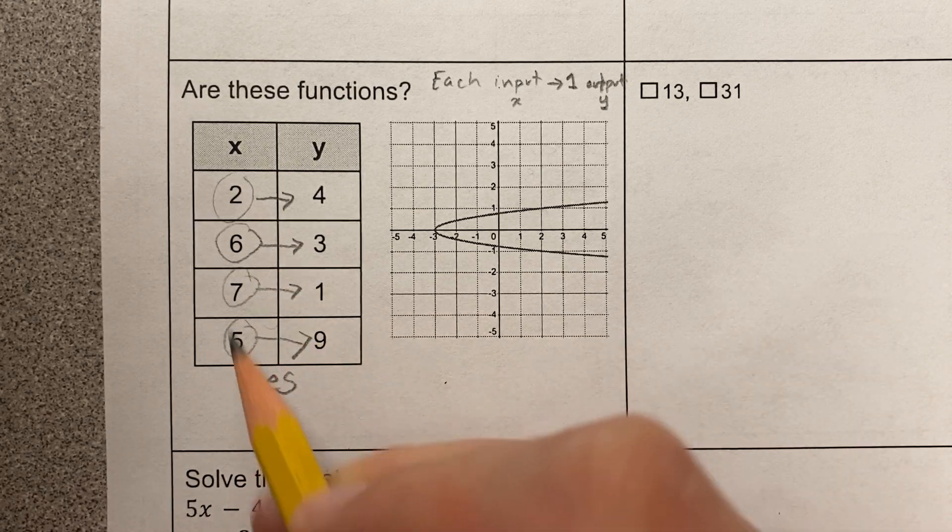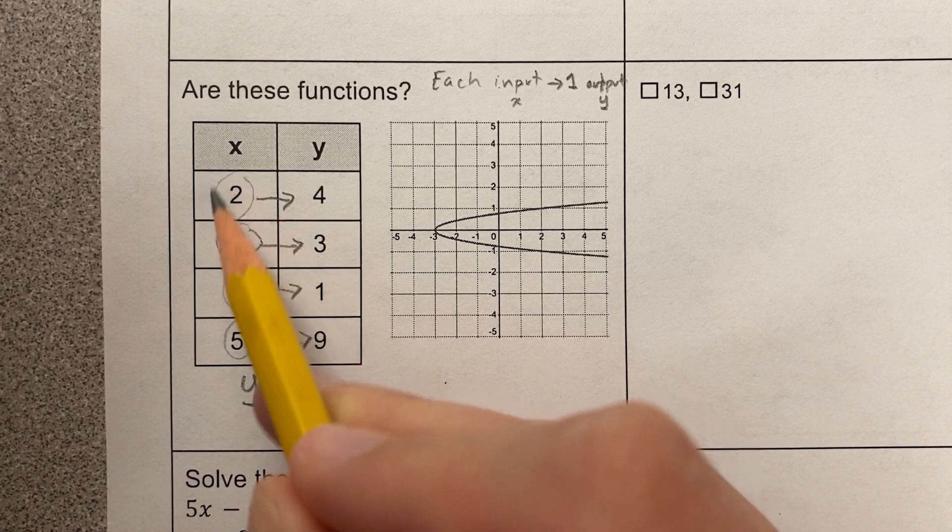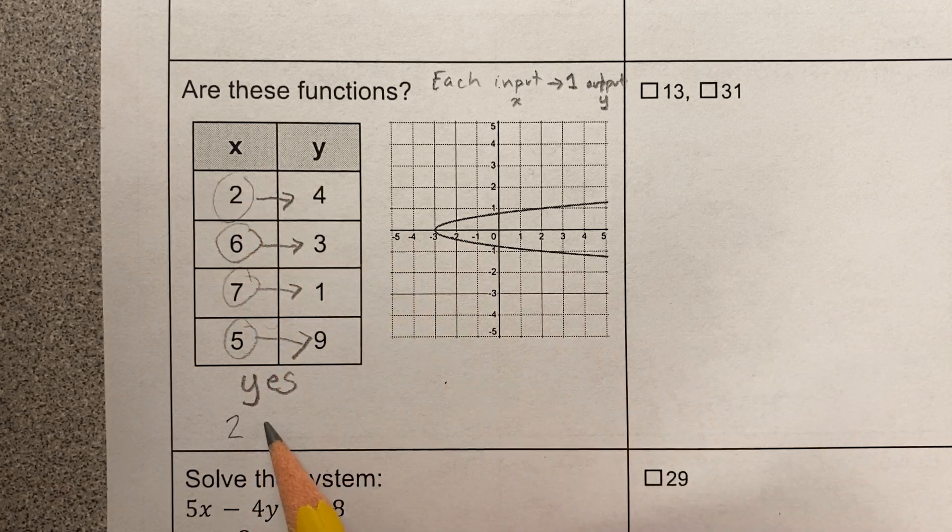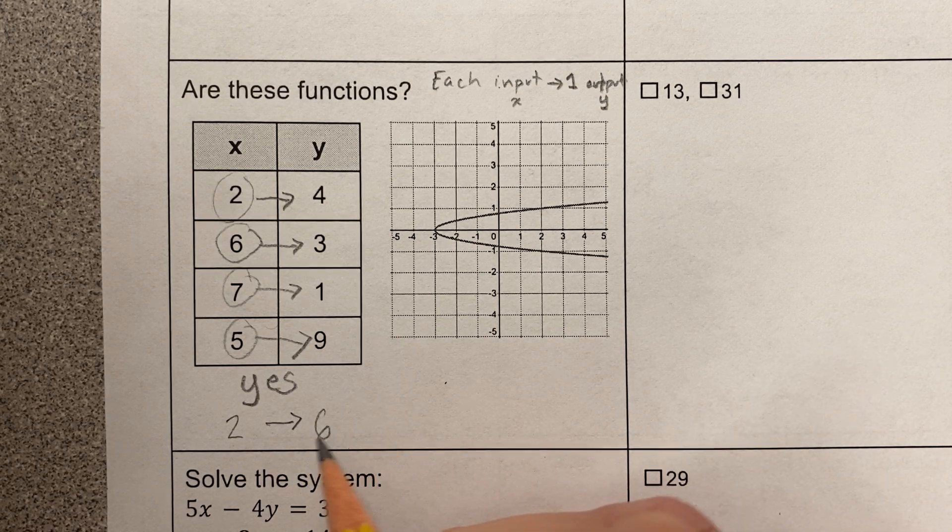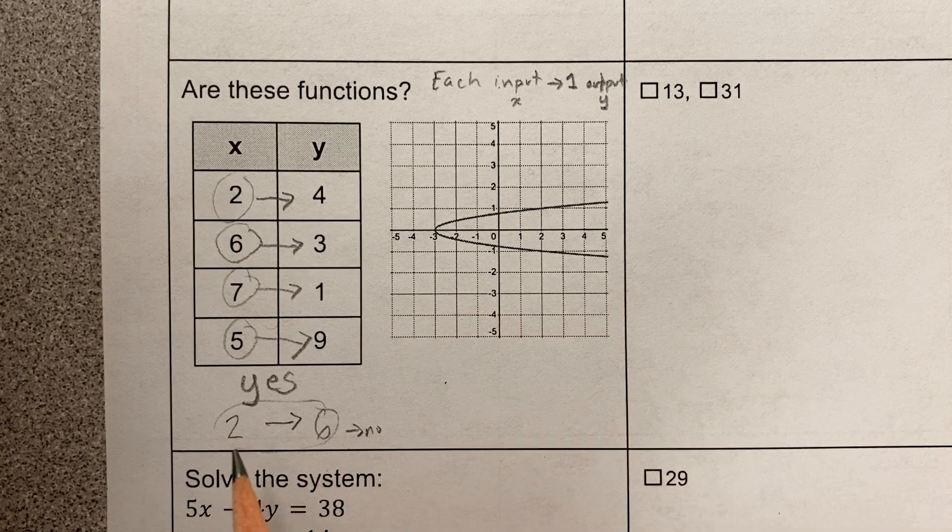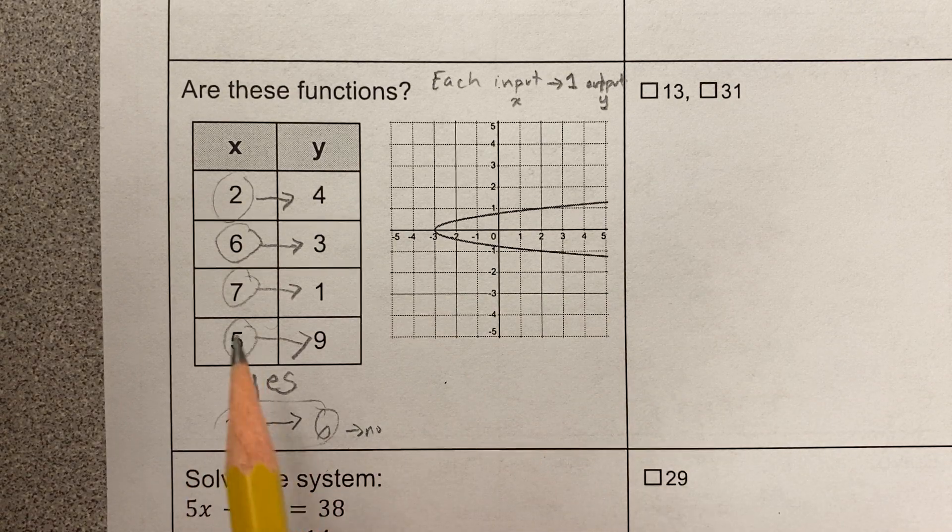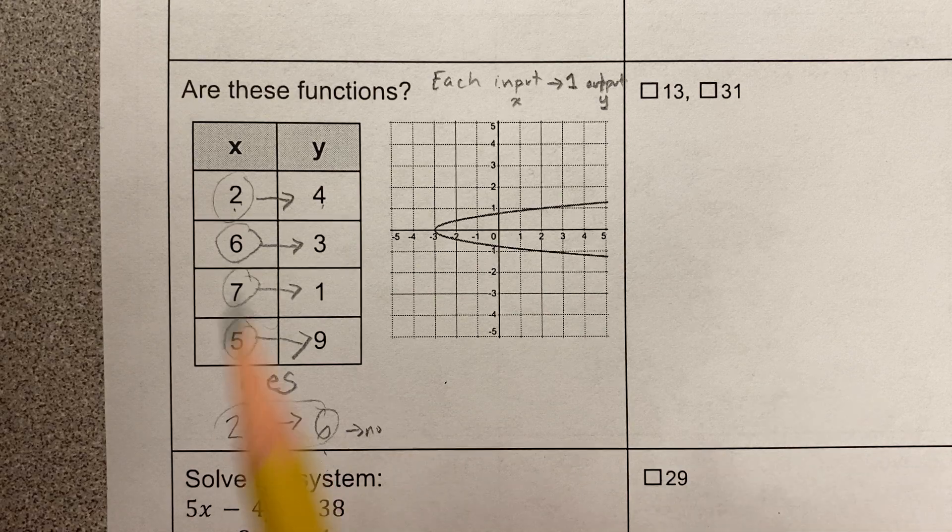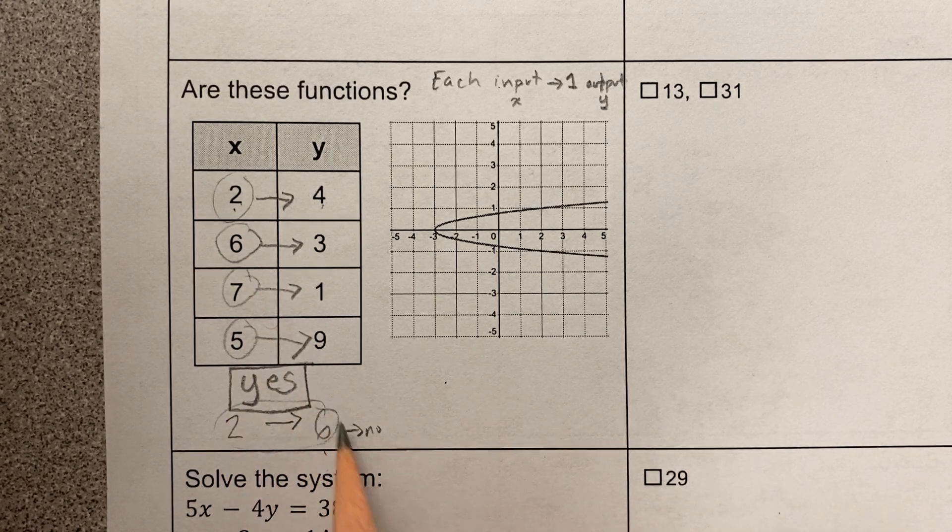Now look, what would make it not a function is, let's say, this input 2, like let's say there was another row, this input 2 had an output of 4, and it also had an output of, let's say, 6, right? Then that, if we had this as part of our table, then that would be a no, because we would say, oh, like, this input 2 has an output of 4 and 6. So, okay, so this one's yes, but that's what would make it no.